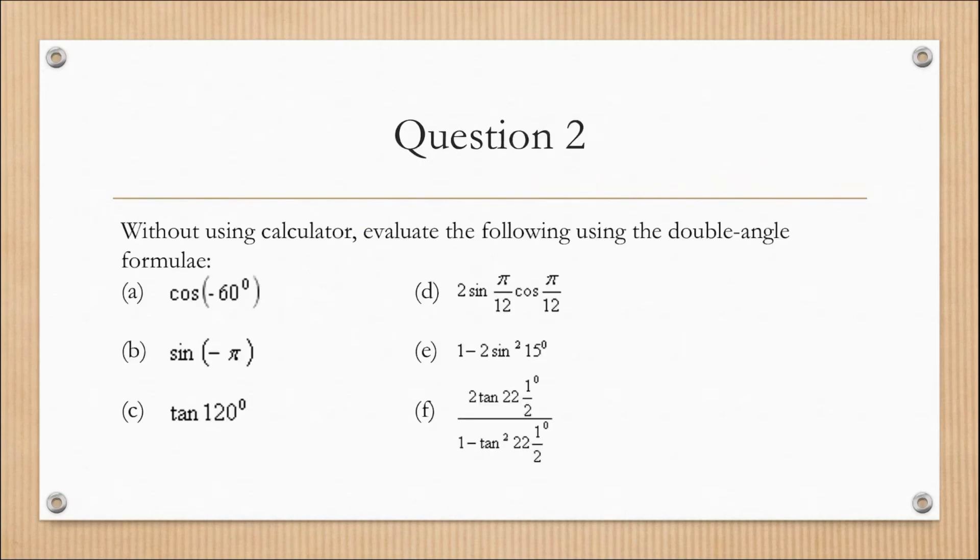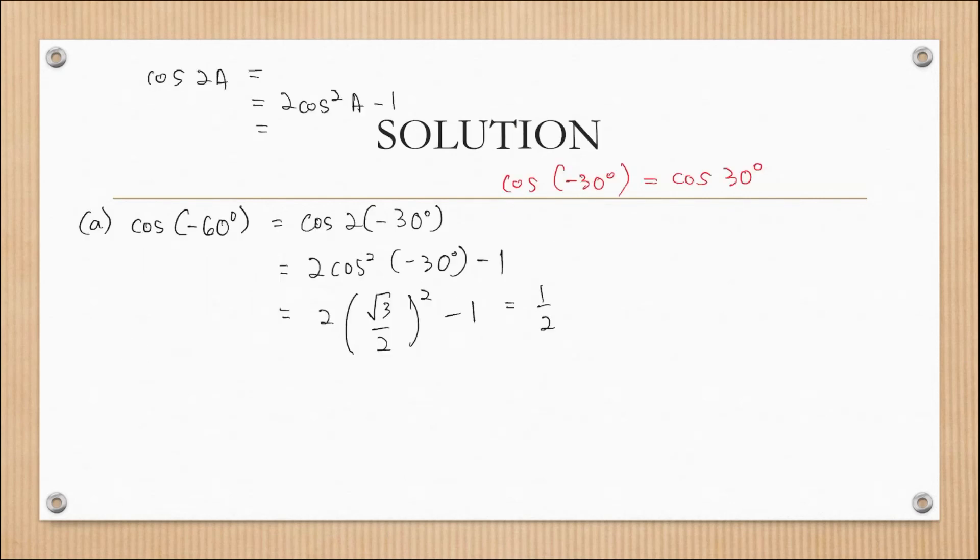Next, I will discuss question 2D. So if you see this form, this is actually 2sin(A)cos(A), which can be found in double angle for sin(2A). So I'm going to change this into sin(2A).